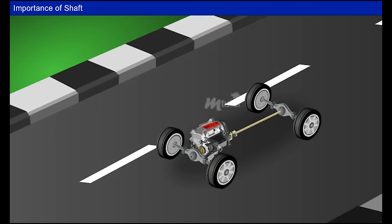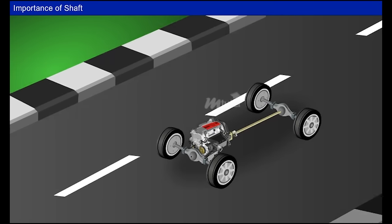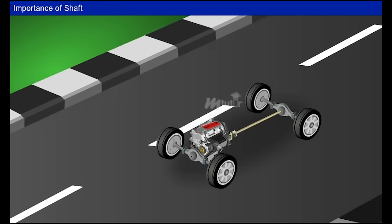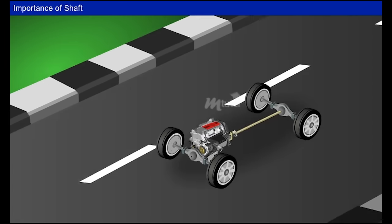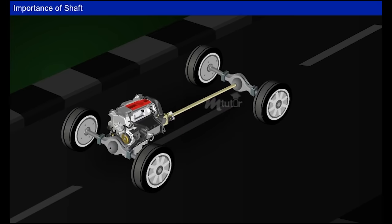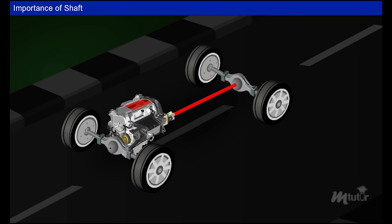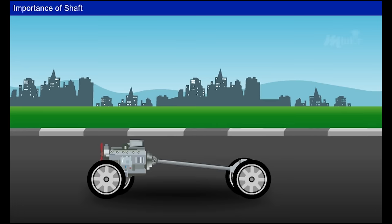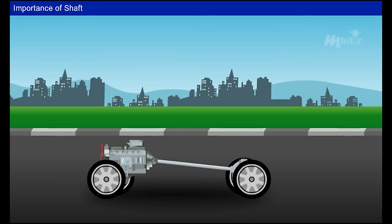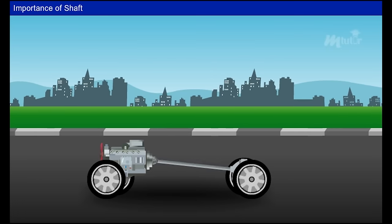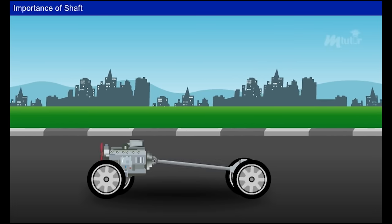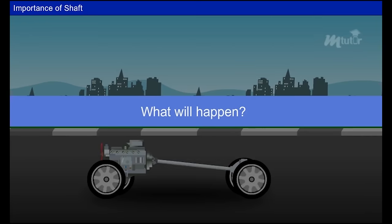All automobiles are made up of a number of machine elements to transmit power. Once the power is generated by the engine, it is transmitted to the wheels through the shaft. If the power transmission distance is quite long and non-coaxial shafts are used for power transmission, what will happen?